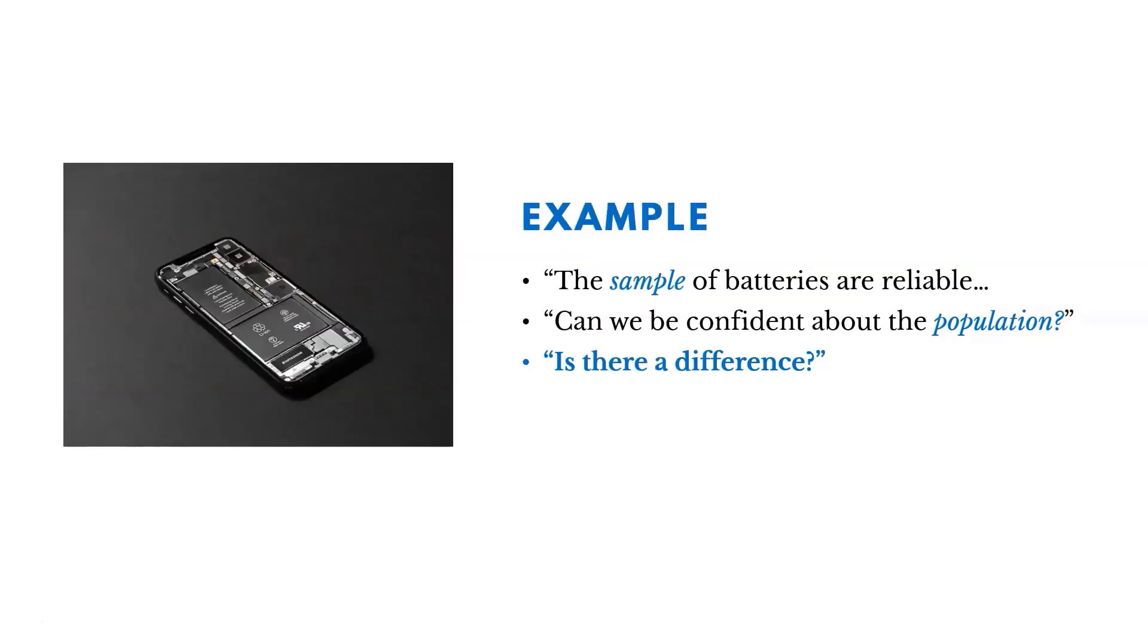Here's another example. Let's talk about batteries, like in phones. The sample of batteries we checked are reliable. Can we be confident about the population of batteries that are going to go into all of our phones? Is there a difference between these things, the sample and the population?